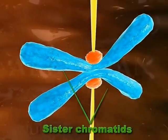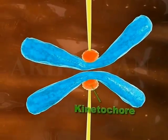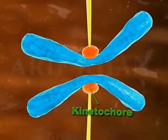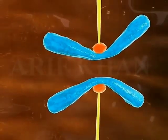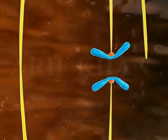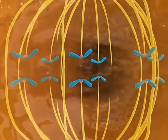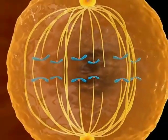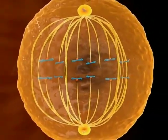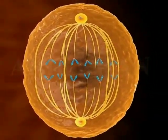During anaphase, the sister chromatids separate at the kinetochores and the daughter chromosomes, along with the divided centromere, move towards the opposite poles as the microtubule shortens.